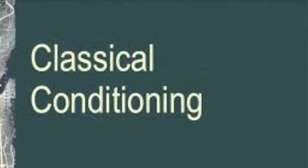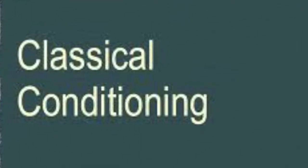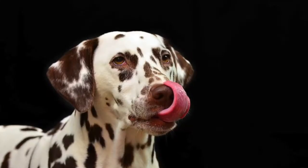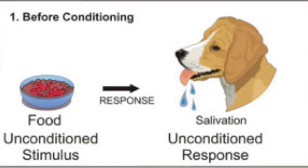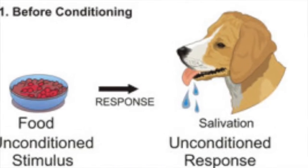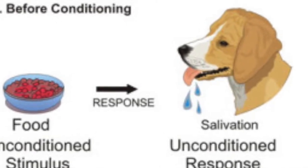Learning is essentially behaving in a different way. We have two main theorists: classical conditioning and operant conditioning. With classical conditioning, we have the example of Pavlov's dog, in which the dog would salivate over a bowl of food — the salivation was the desired response generated from the stimulus of the food.